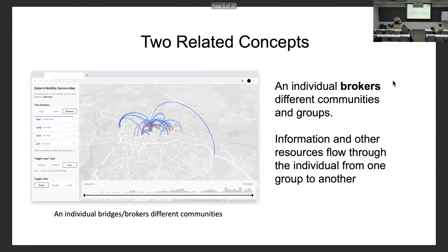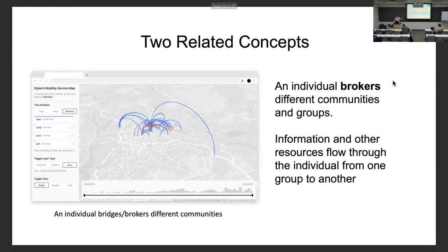We have the Silk Road here — the merchants traveling across the continents were acting as bridges, and new information, cultures, and artifacts were introduced through that bridge. The second position, where you look at the individual as the bridge, can look something like Dylan's mobility service map — the points on the map that Dylan visited — where Dylan connects different points, acting as a bridge. Similar ideas but different units of analysis.